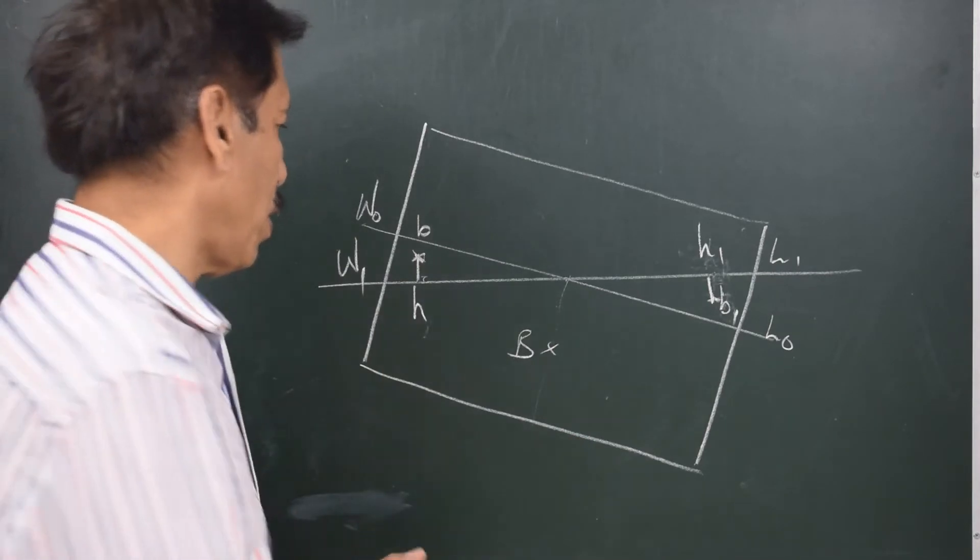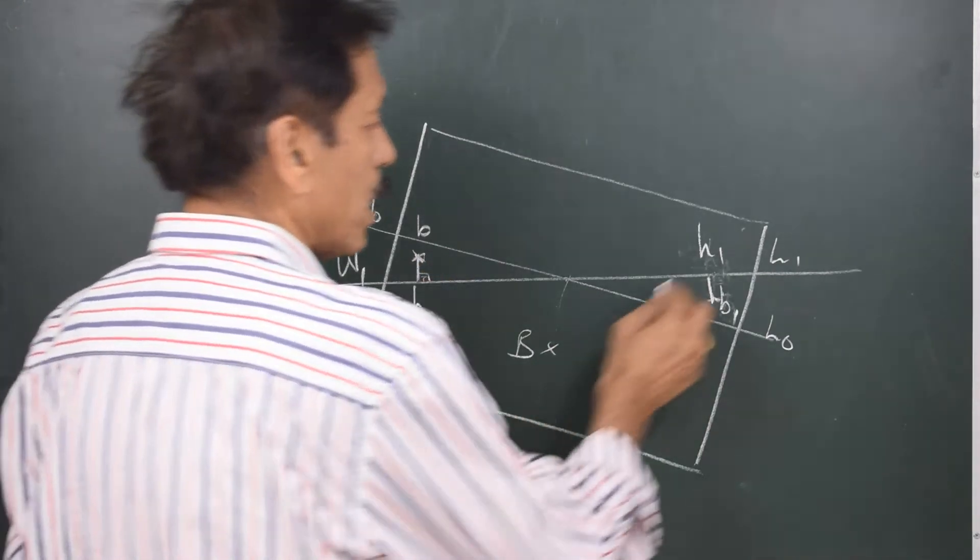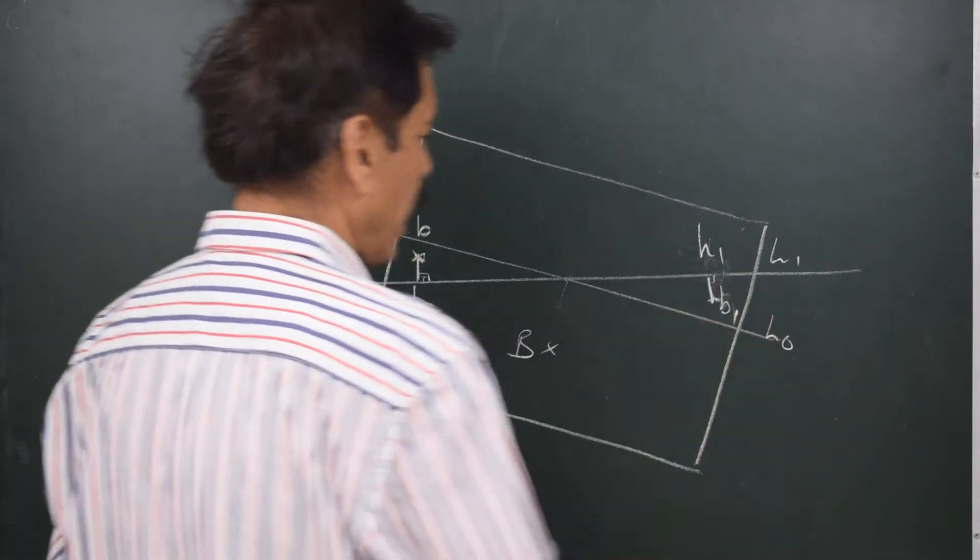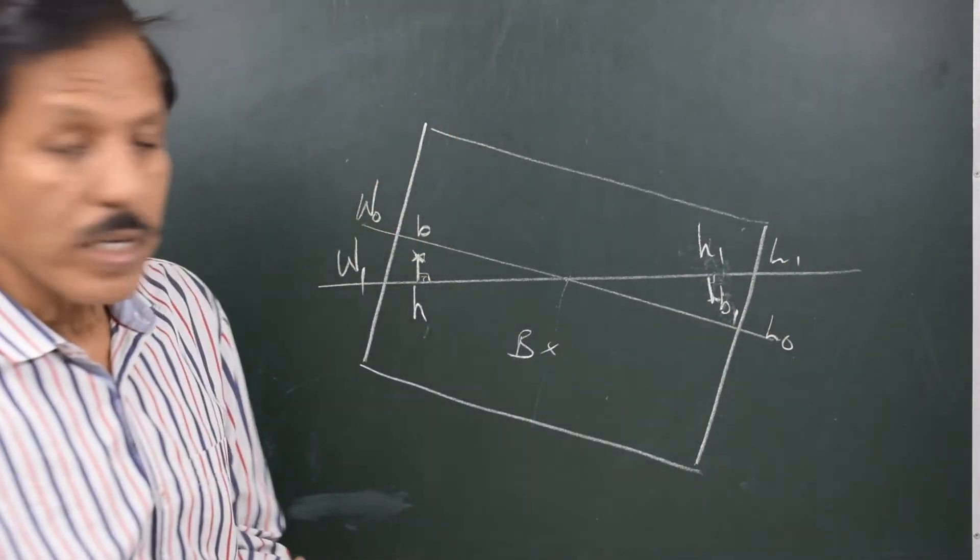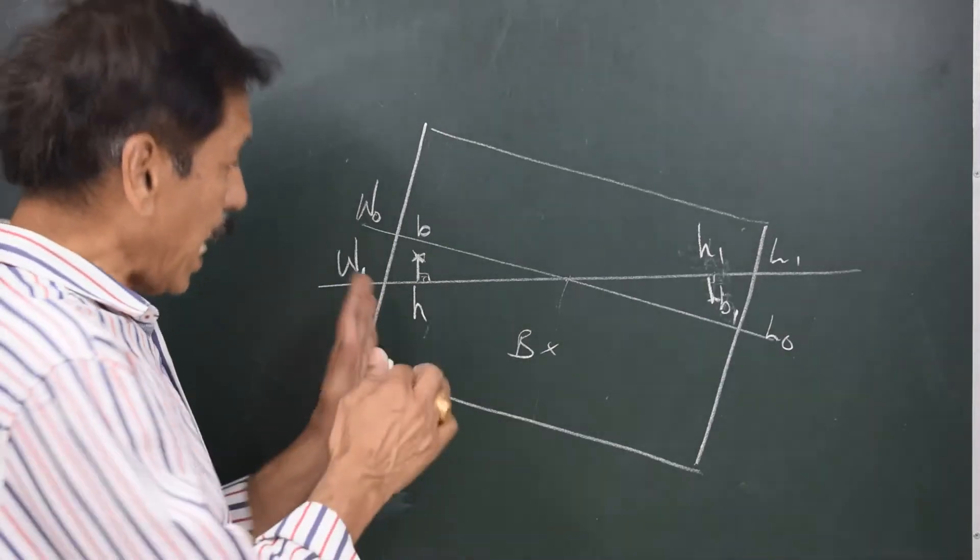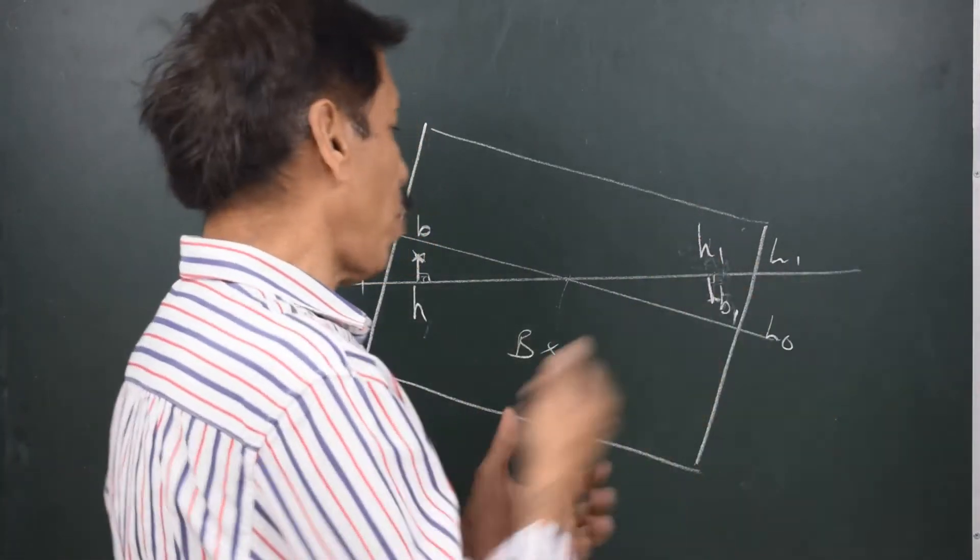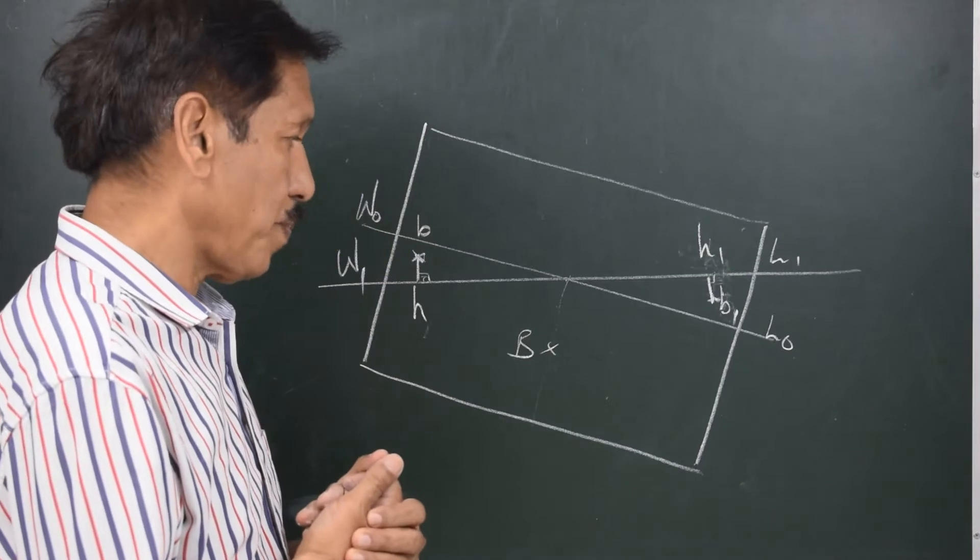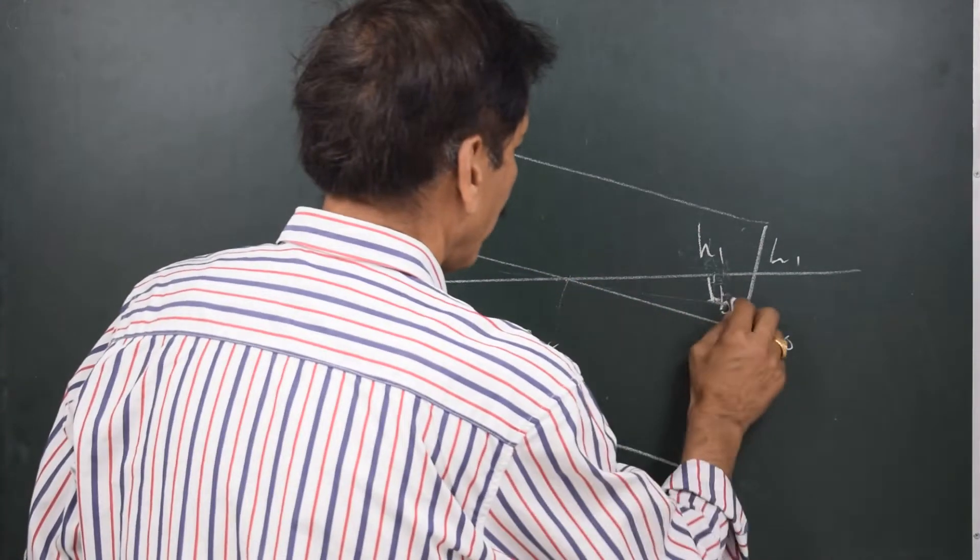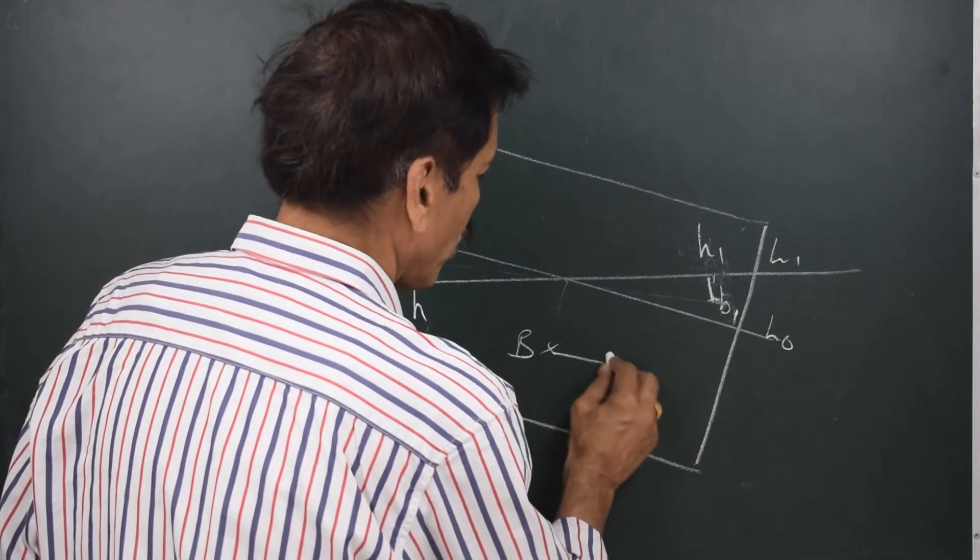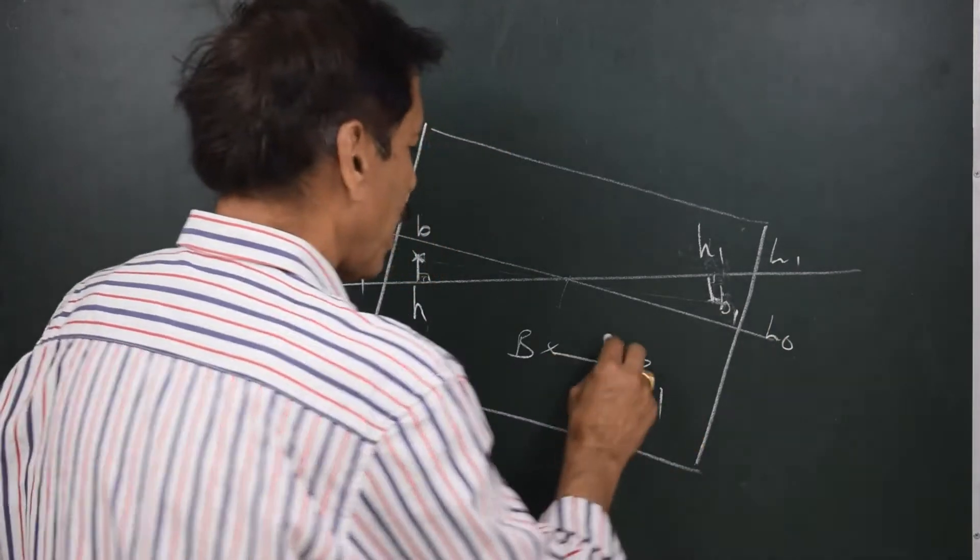So from the centroid of these wedges, I draw a perpendicular on the present water line meeting the present water line at H and H1. So can I say that the BB1 is the actual displacement of the wedges whereas HH1 is the transverse displacement of the wedges. Now B will shift in a direction parallel and proportional to BB1. Once again, this is the righting lever GZ.